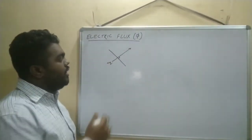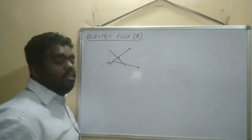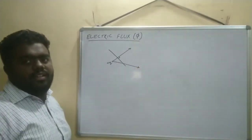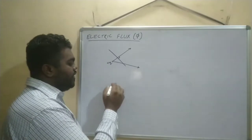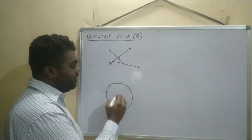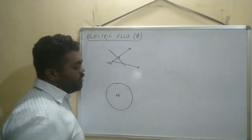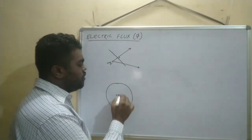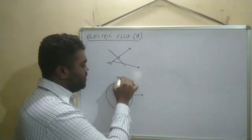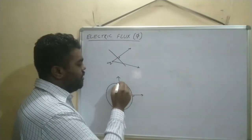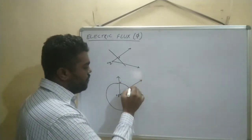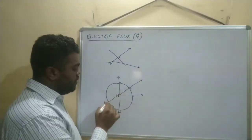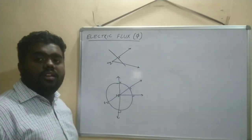This is electric flux, and this is not electric flux. Electric flux is denoted by Φ (phi). Generally we consider electric flux inside a closed surface where a plus Q charge is placed. From this charge, whatever lines come out from the surface will be perpendicular — you can notice from any angle it will be perpendicular.